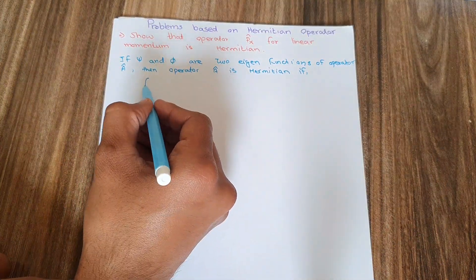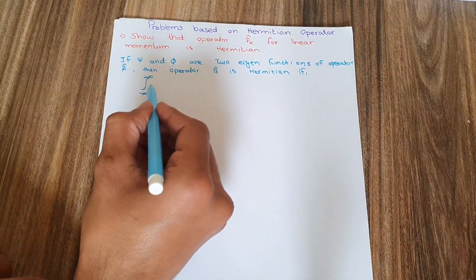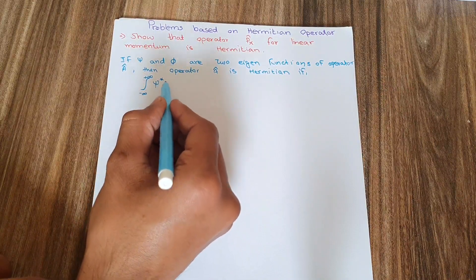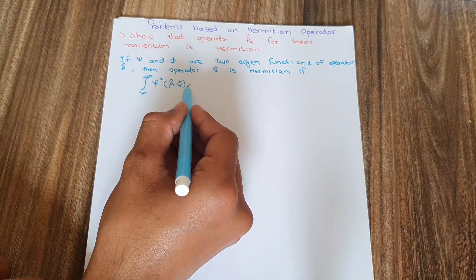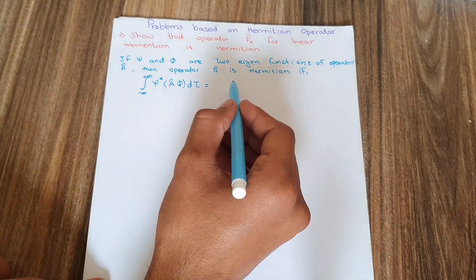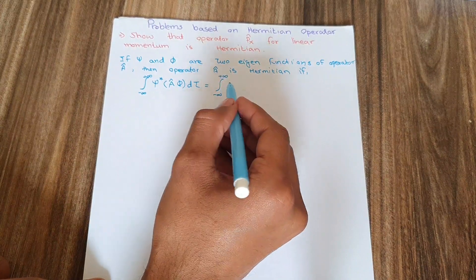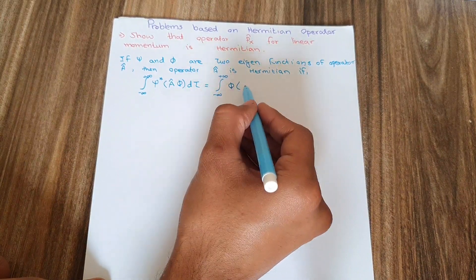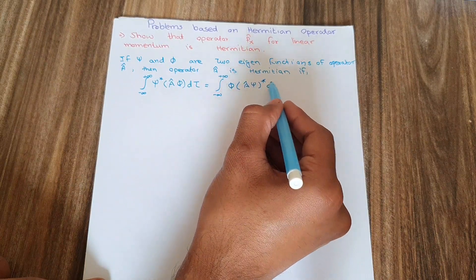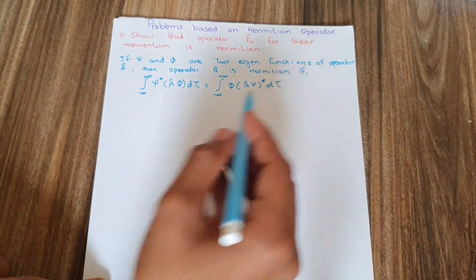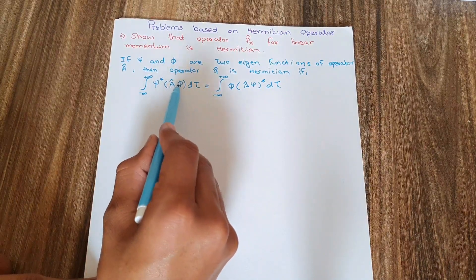Operator A is a Hermitian operator if and only if: the integral from negative infinity to positive infinity of psi* times A applied on phi, d-tau, is equal to the integral from negative infinity to positive infinity of phi times A applied on psi*, d-tau. Here the operator is applied on phi on the left side, and on psi on the right side.